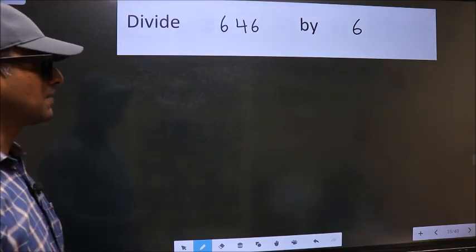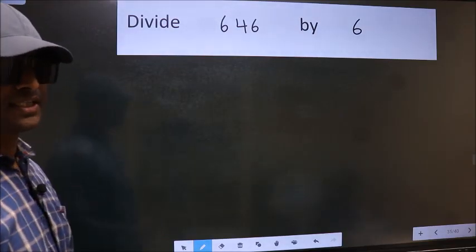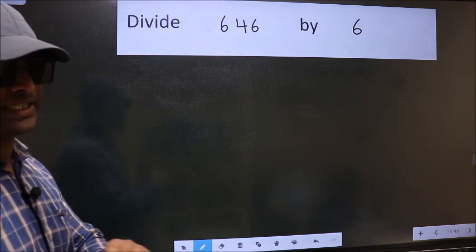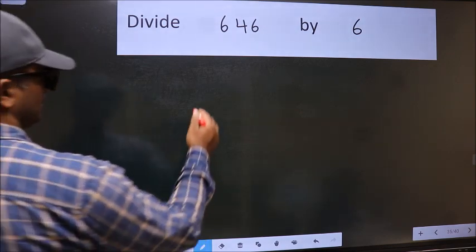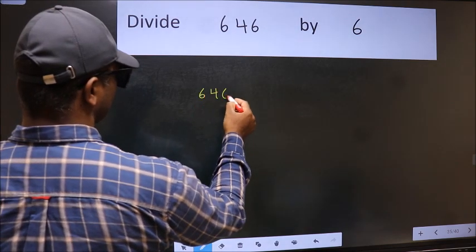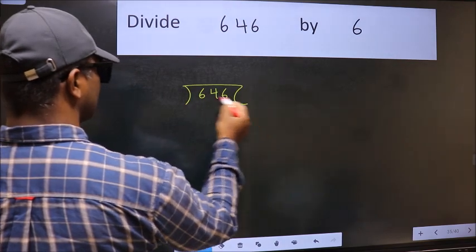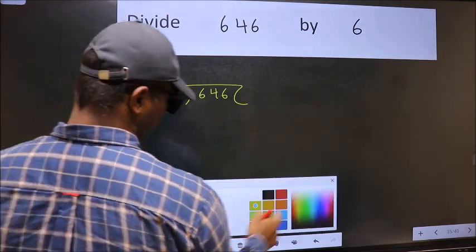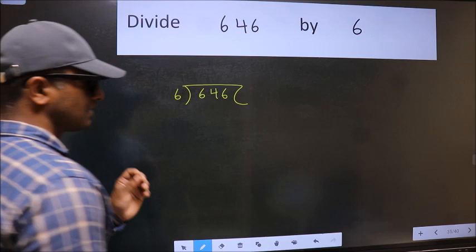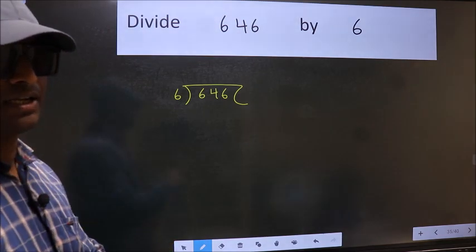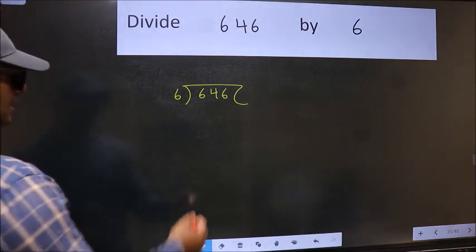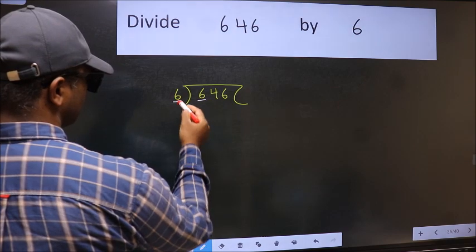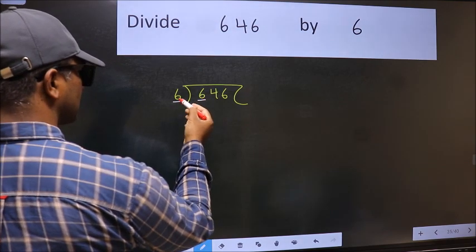Divide 646 by 6. To do this division, we should frame it in this way: 646 here and 6 here. This is your step one. Next, here we have 6 and 6 here. When do we get 6 in the 6 table?